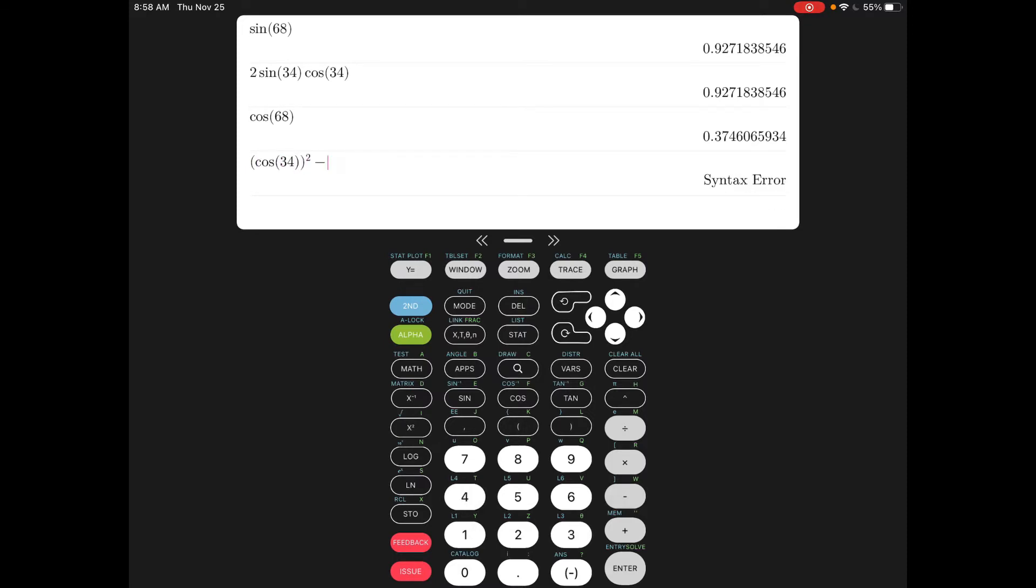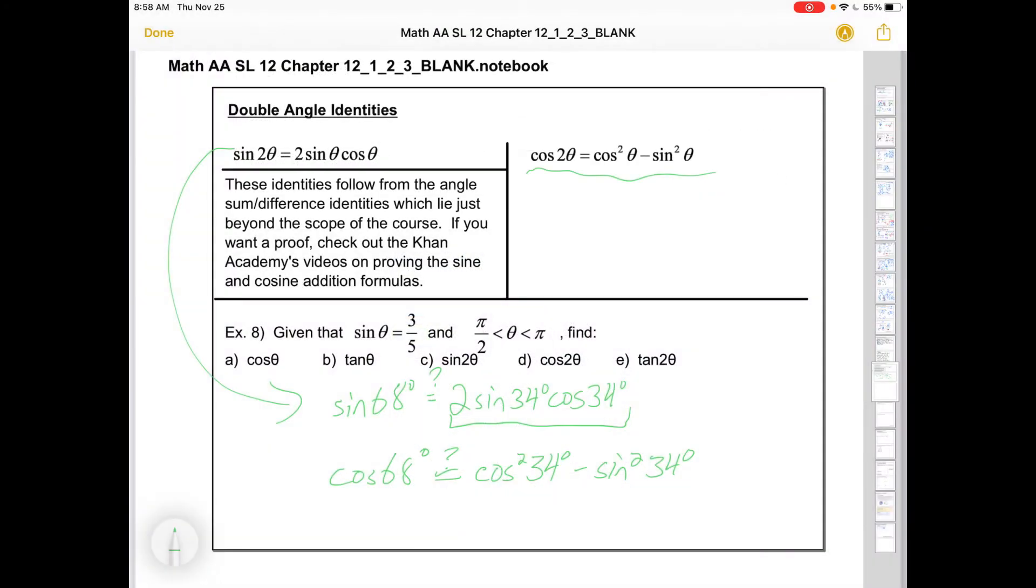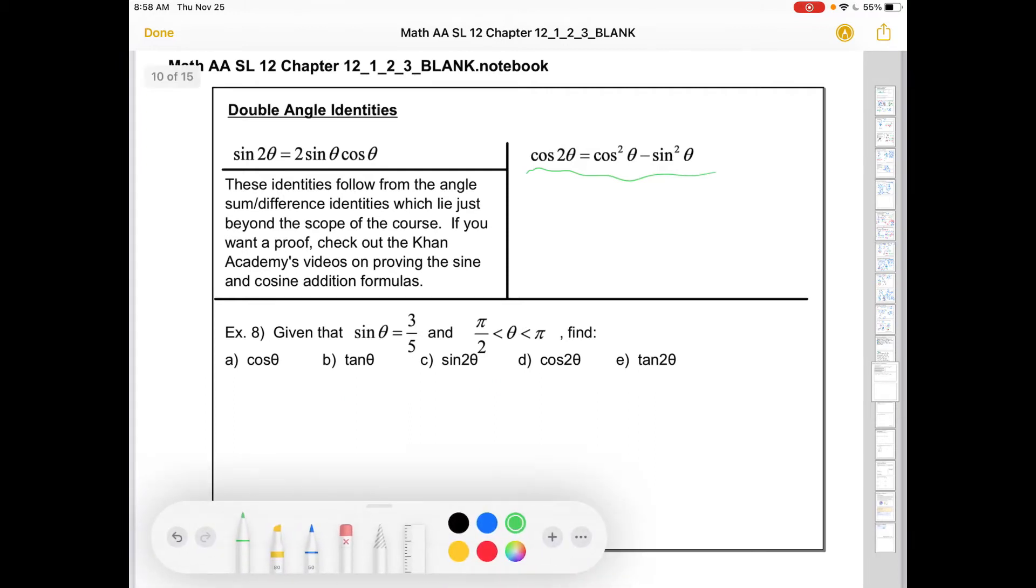You can see they are the same number. So these are true identities. Sin 2θ equals 2 sin θ cos θ. Cos 2θ equals cos² θ minus sin² θ. Now it turns out that the cosine one has a bunch of different ways that you can write it, and that's because of the Pythagorean identity that we already know.